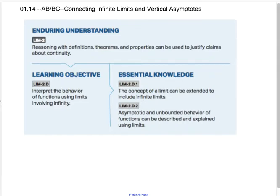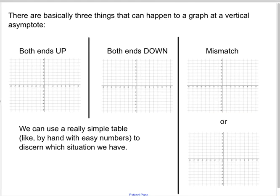Let's talk about what can happen when we have vertical asymptotes. There are basically three things that can happen with vertical asymptotes. There are also a couple of separate options if a graph only exists on one side of an asymptote, like for instance a logarithmic function, but we'll deal with that in a couple minutes. Let's assume that most of the time when we're seeing asymptotes, we're seeing them from rational functions.